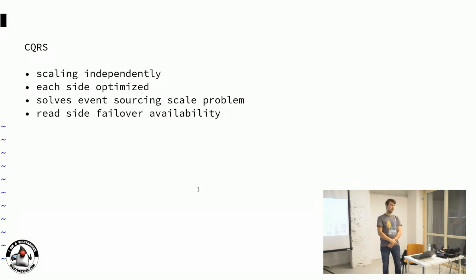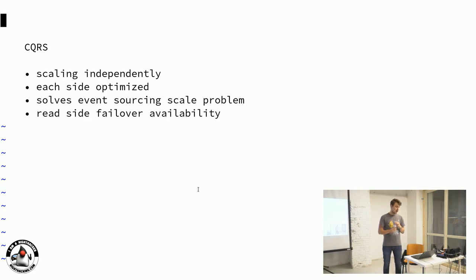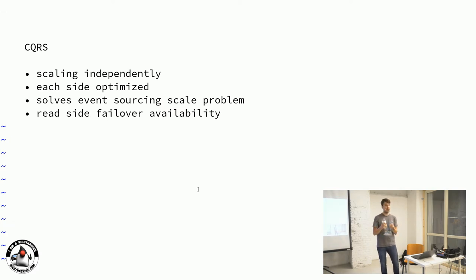This means we are able to scale both read and write sides, and we can also scale them independently. We can have more read-side instances than write-side instances. Why? In a typical enterprise application, the number of reads highly outperforms the number of writes — you're far more often doing HTTP GETs than changing something in the system. So you can fire up many more read instances, all consuming events and storing state in a database or cache, delivering high traffic, while keeping few write instances.